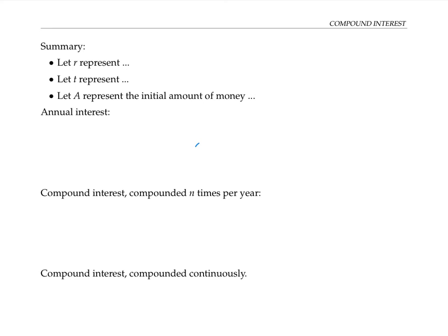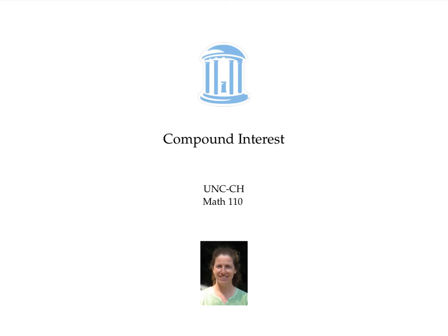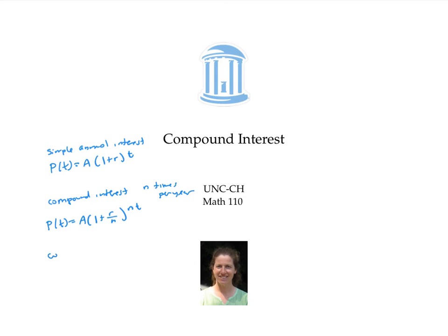To summarize: if r is the annual interest rate written as a decimal (so 2% would be 0.02), t is the number of years, and A is the initial amount of money, then for simple annual interest compounded once a year, the formula is p(t) equals A times (1 + r) to the t. For compound interest compounded n times per year, the formula is p(t) equals A times (1 + r/n) to the nt. And for compound interest compounded continuously, we get p(t) equals A times e to the rt. In this video, we looked at all three kinds of compound interest problems.